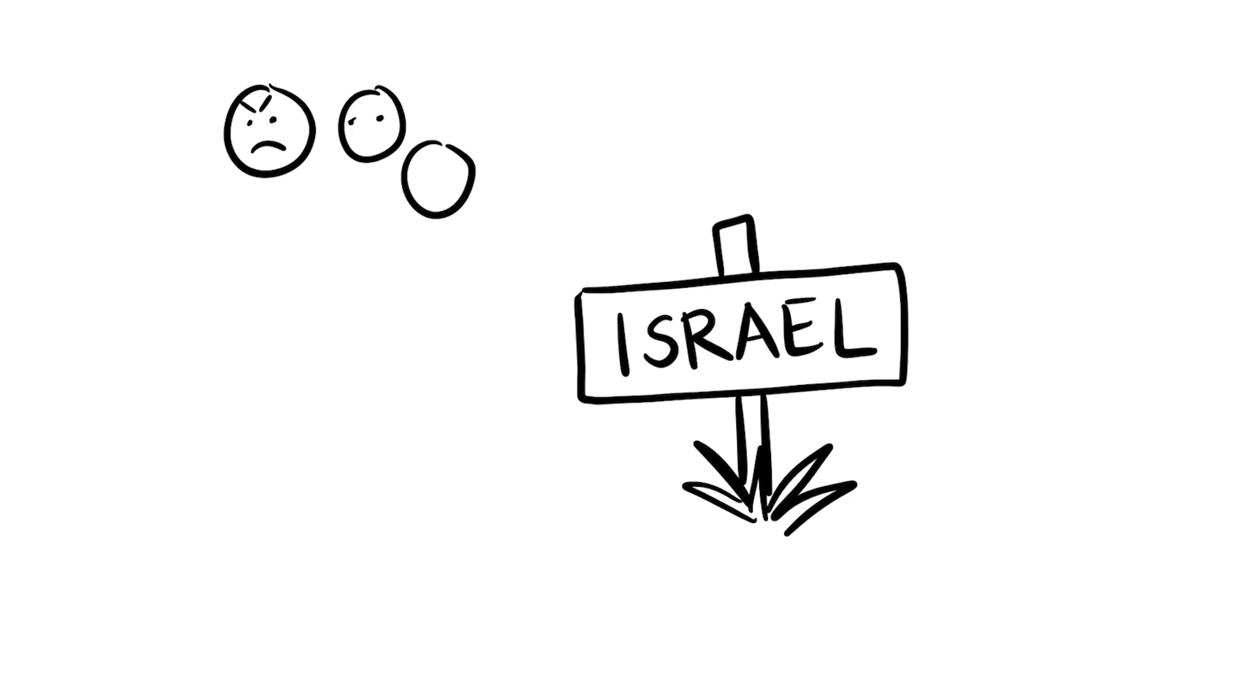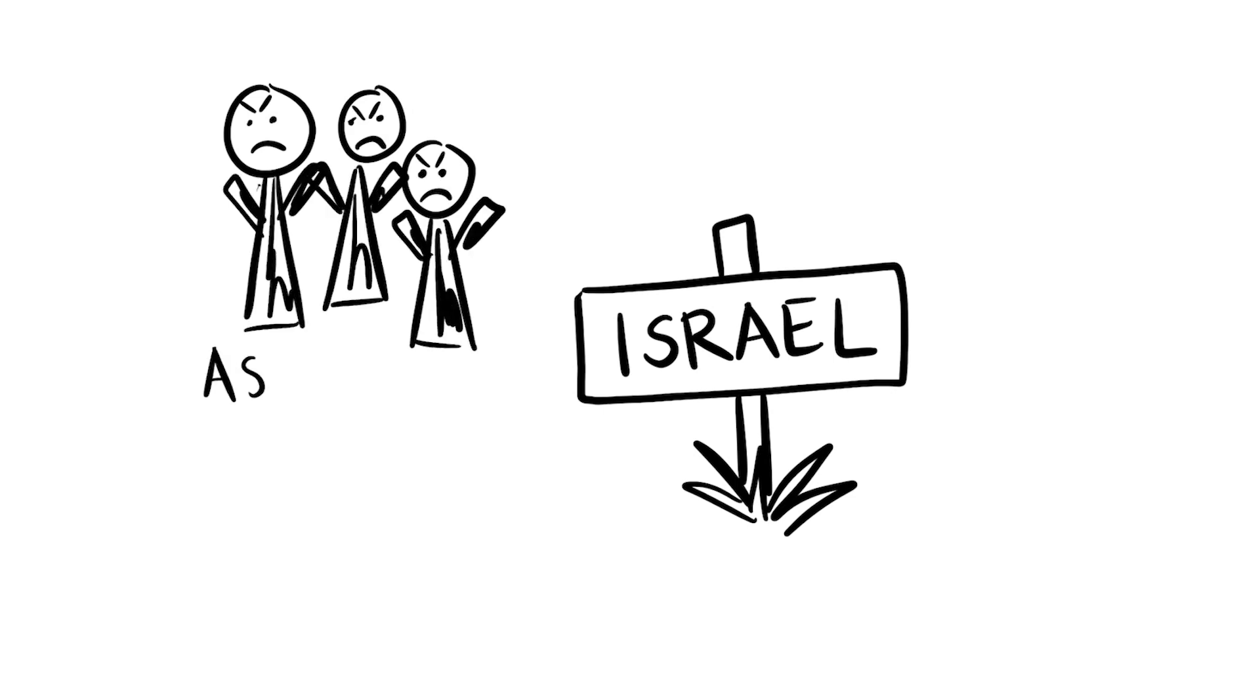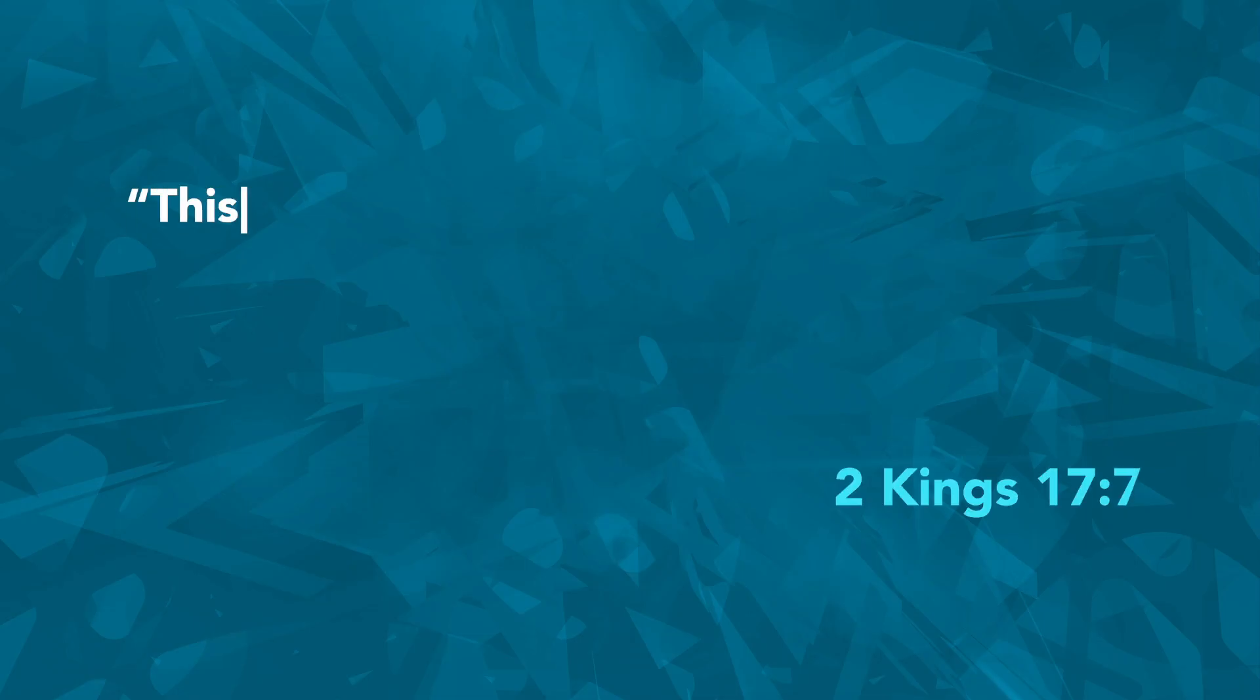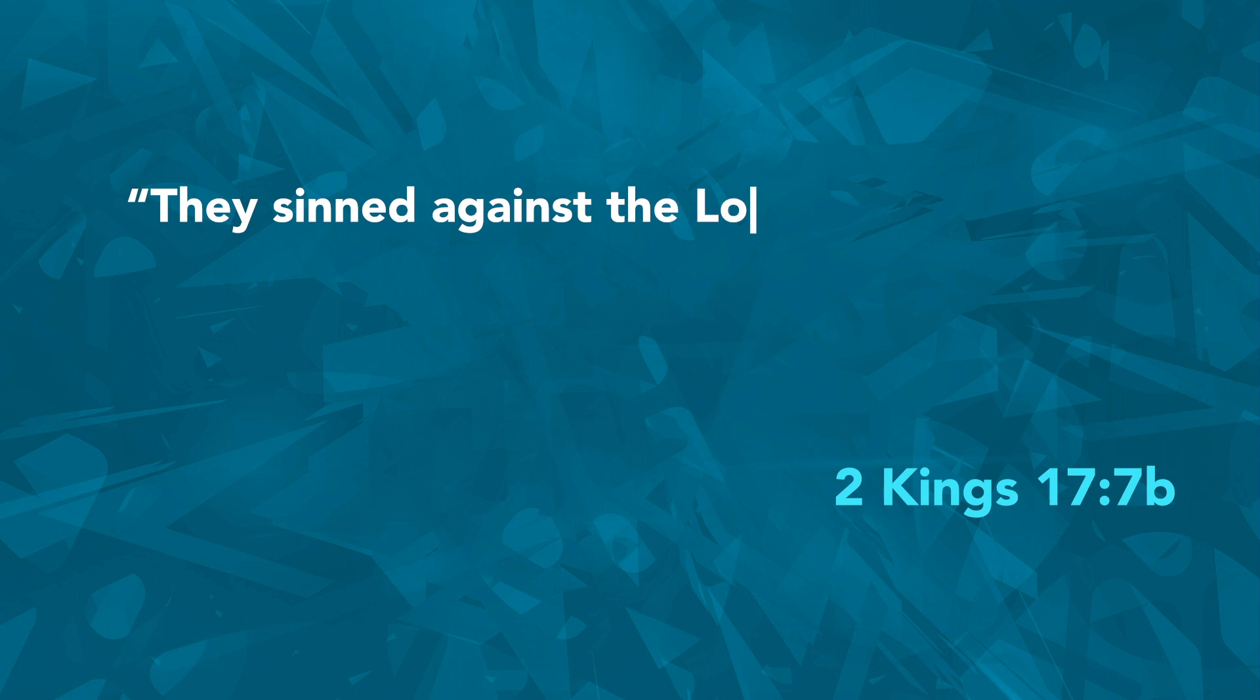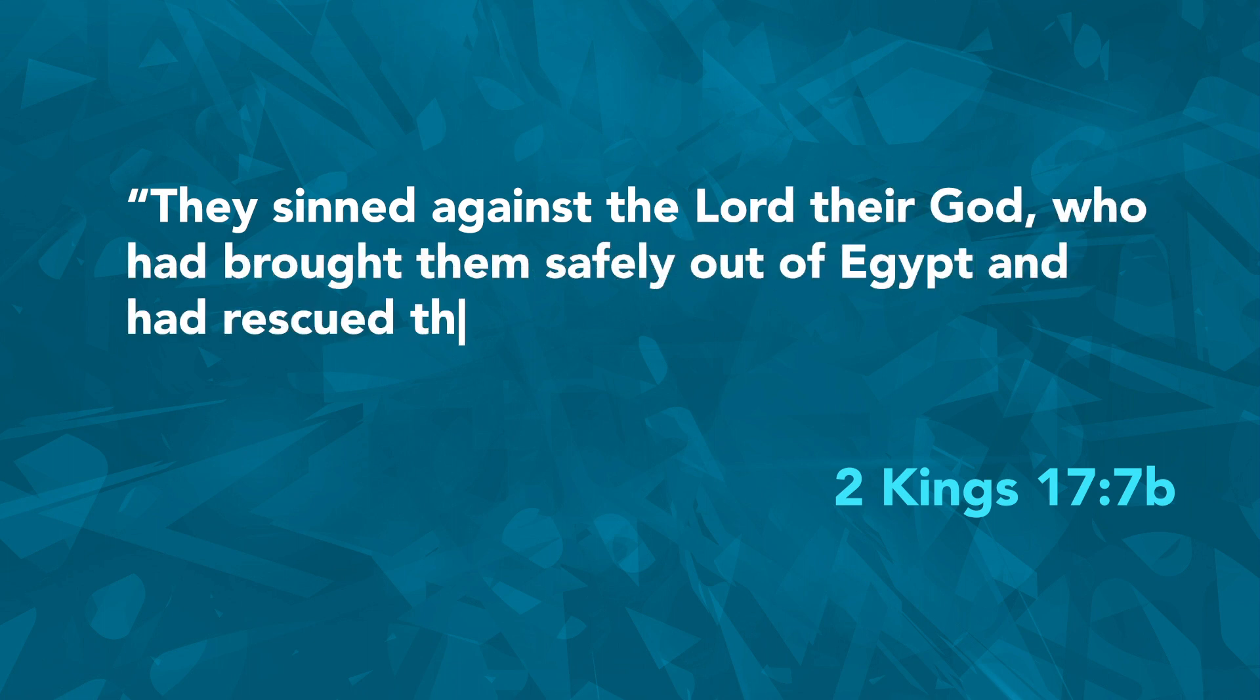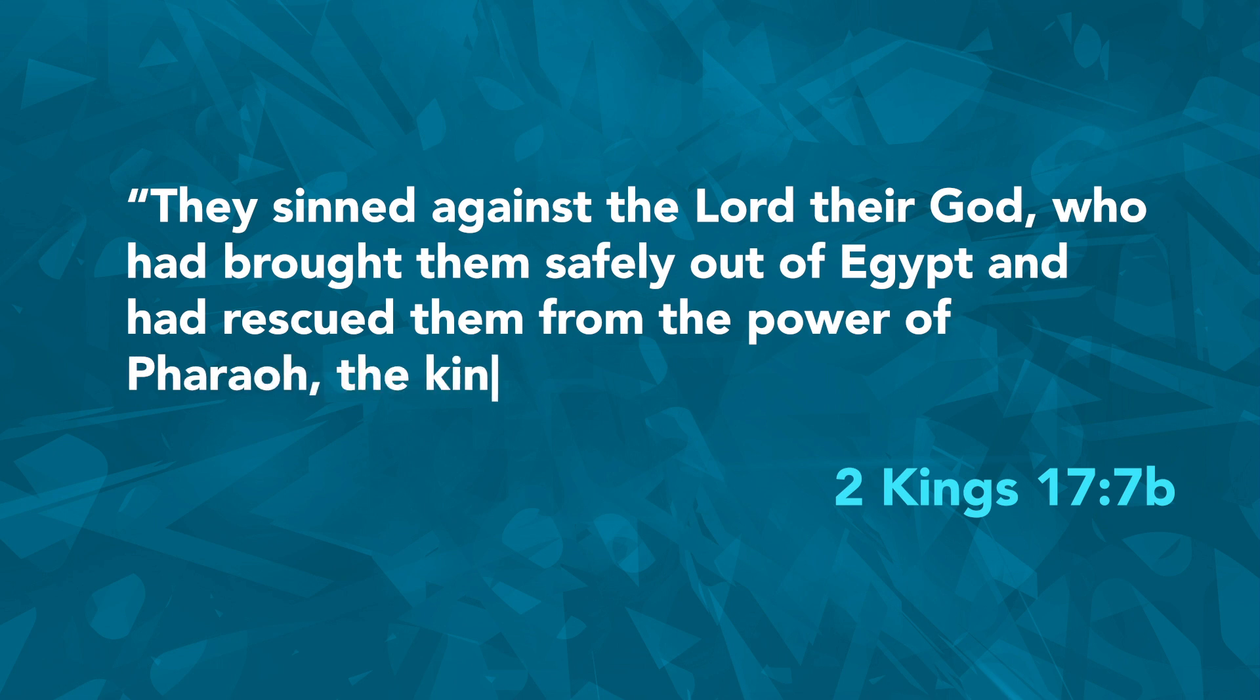None of the kings in the north followed God. So God allowed the Assyrians, a wicked nation, to defeat Israel and take them away. Second Kings 17 tells us, 'This disaster came upon the people of Israel because they worshiped other gods. They sinned against the Lord their God who had brought them safely out of Egypt and had rescued them from the power of Pharaoh, the king of Egypt.'